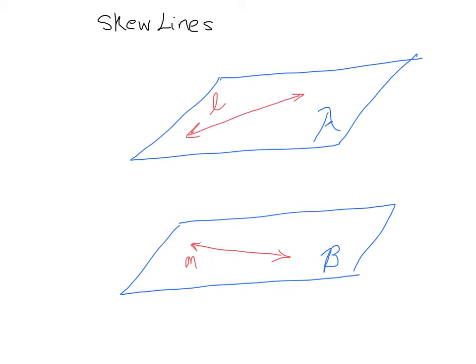But will they ever meet? Absolutely not. Line L is all the way up here and it will stay in this domain, in this plane, and it will never meet this line, line M over here. So when that happens, the lines are said to be skew.